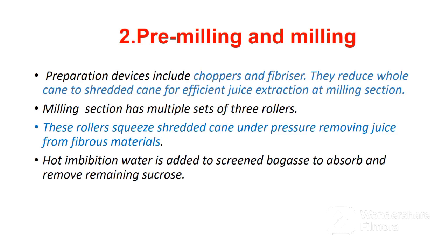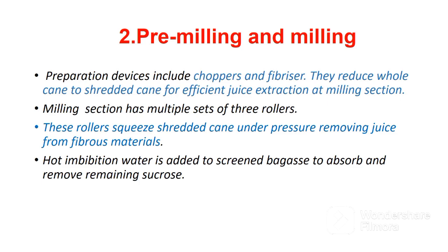The milling section has multiple sets of three rollers. These rollers squeeze shredded cane under pressure, removing juice from fibrous materials. Hot imbibition water is added to screened bagasse to absorb and remove remaining sucrose. Bagasse from the last mill is dropped to a bagasse carrier which transports it to the powerhouse. Remember, bagasse is used to generate electricity in the sugar industry. Biocide is added to extracted juice to kill microorganisms which may reduce the sucrose content of the juice. Extracted juice is sieved to remove bagasse, weighed, and pumped to the juice treatment section.